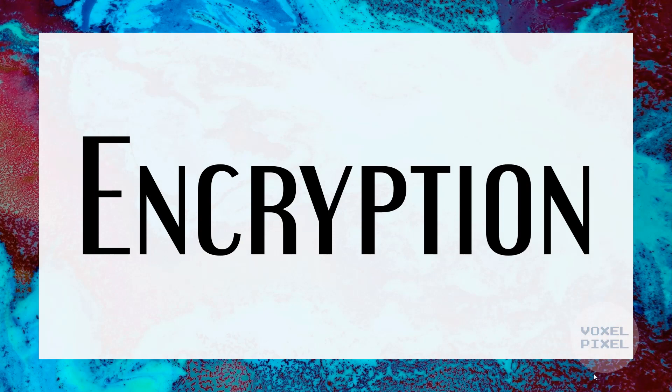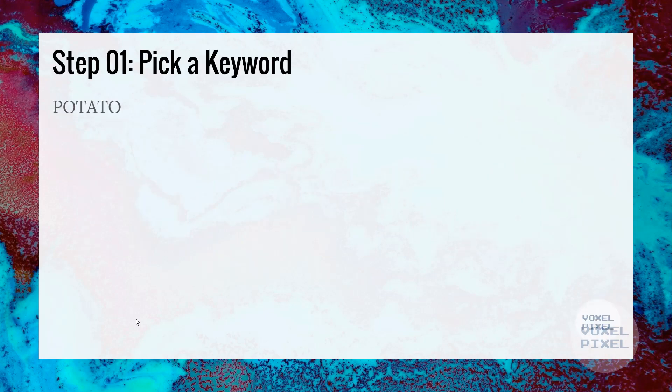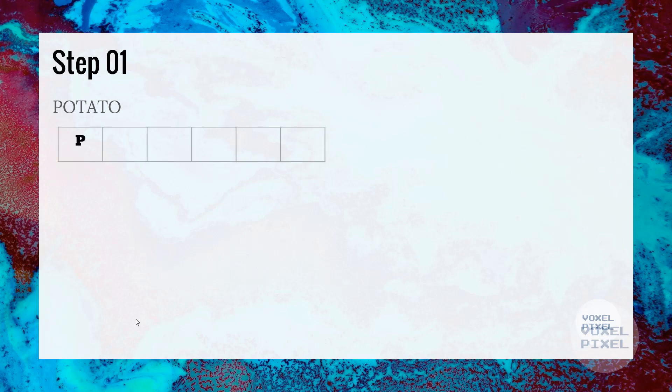Let's look at encryption first. For this tutorial, let's pick a keyword potato. Next we will arrange our keyword's individual characters into columns. Each column will have an individual character of the keyword. First is the P, then comes O, then T, then A, then T, then last character O.